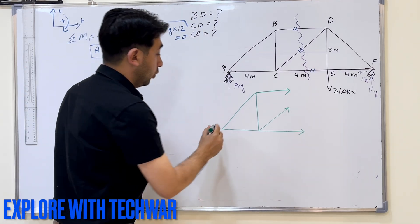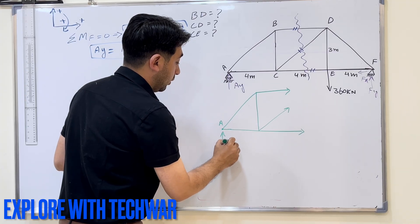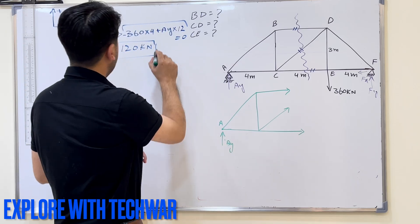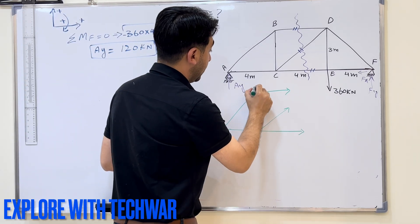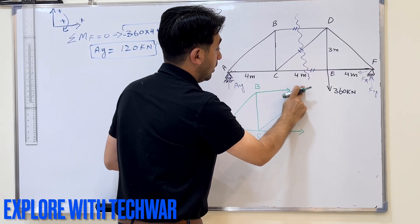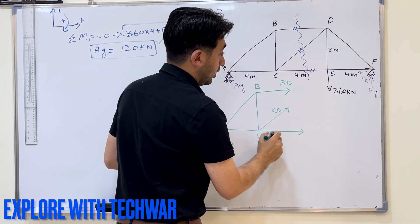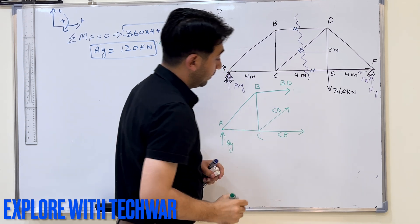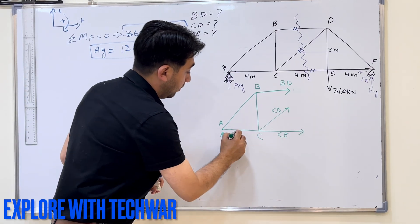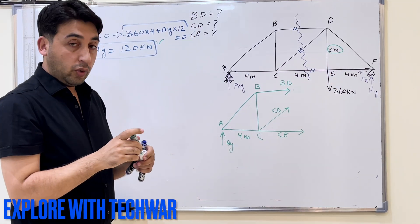Redrawing the left half: we have point A with Ay equal to 120 kilonewtons acting upward. We have points B and C. The three cut members are BD, CD, and CE — these three are unknown and we need to find them. The horizontal panel length is 4 meters and the height is 3 meters, as given.